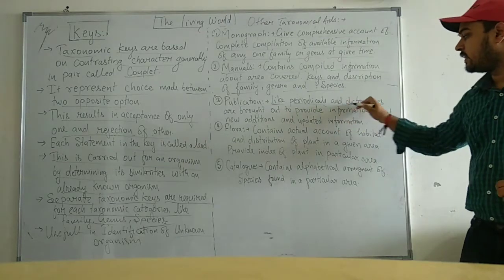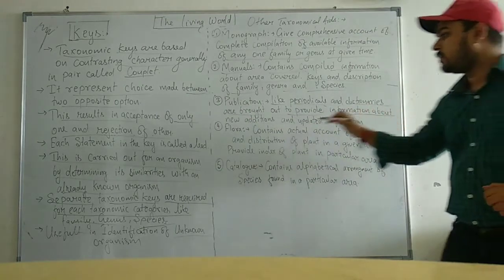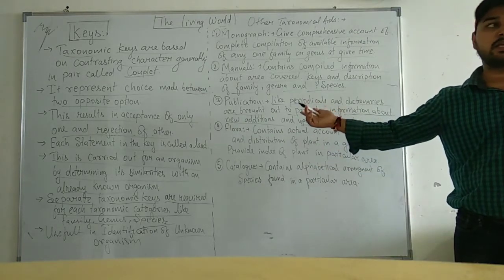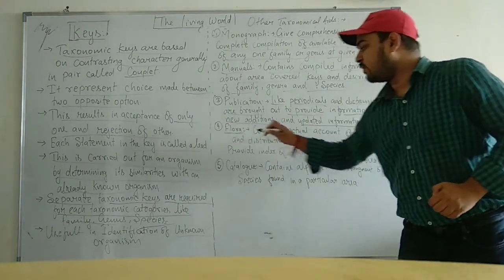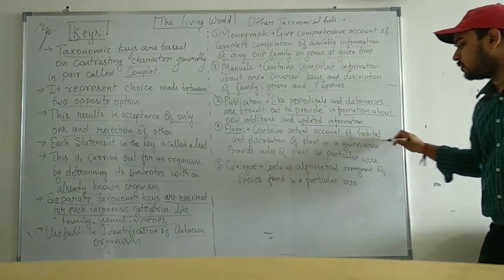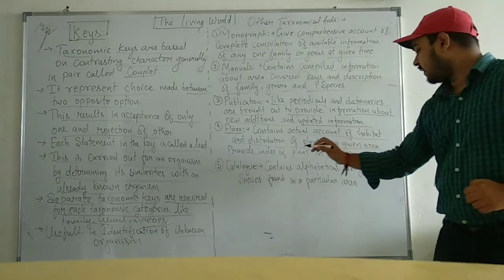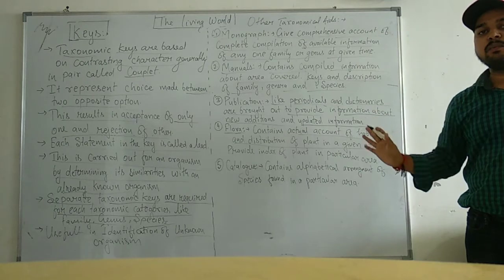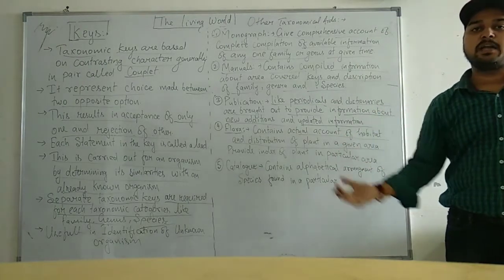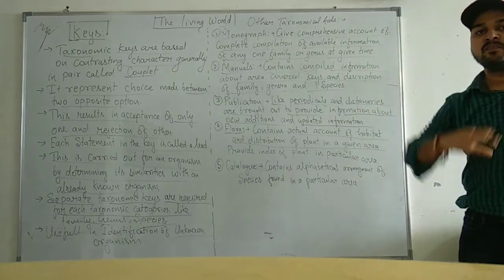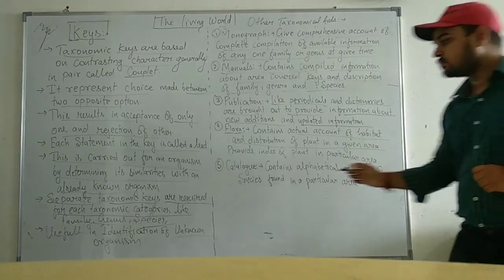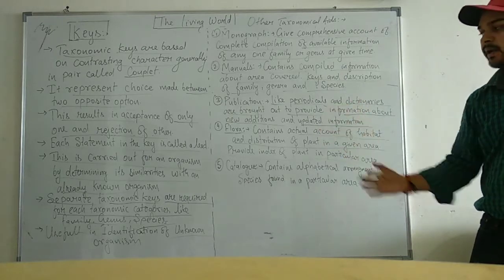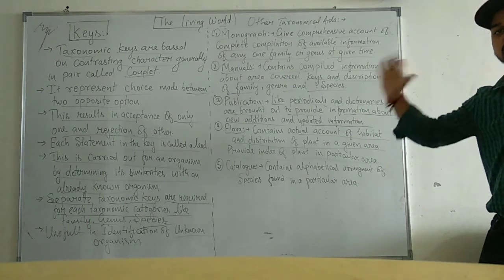Periodicals and dictionaries are brought out to provide information about new editions and updated information about new species. Then, Flora — Flora contains an actual account of the habitat and distribution of plants in a given area. If we want to know about the plants of a particular area, we look at the Flora and we will find the list of plants found in that area.